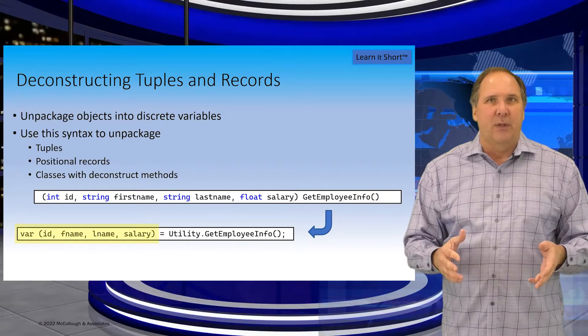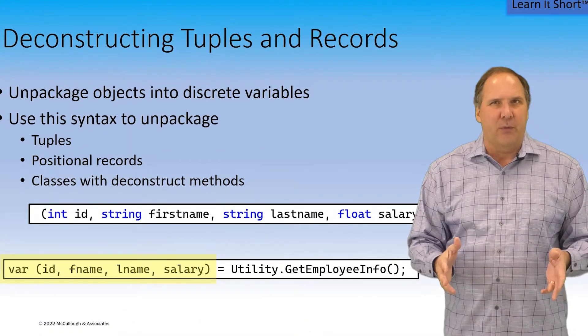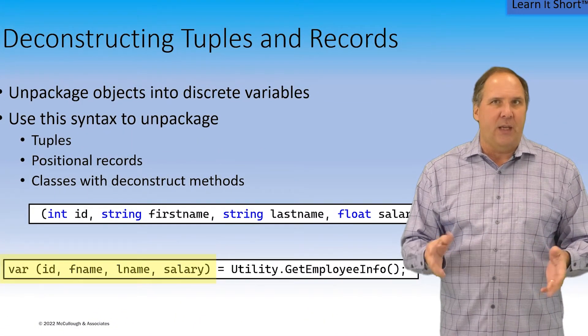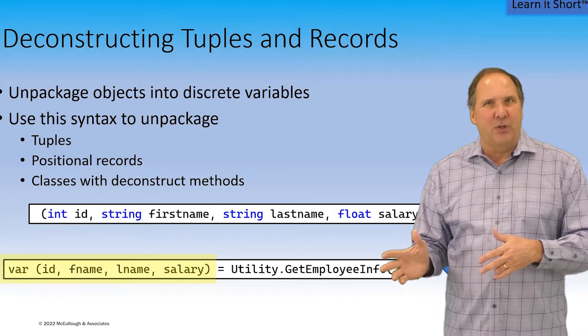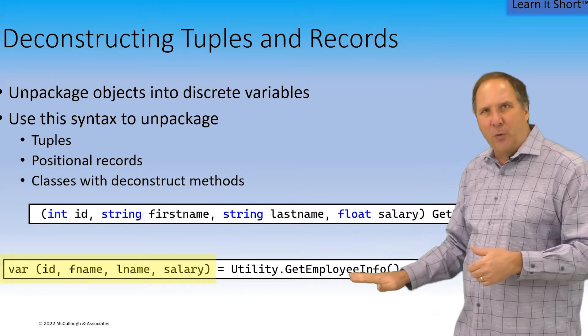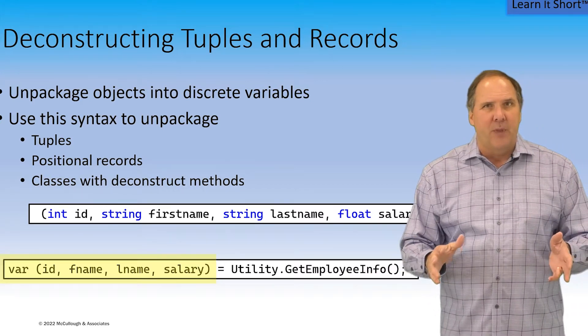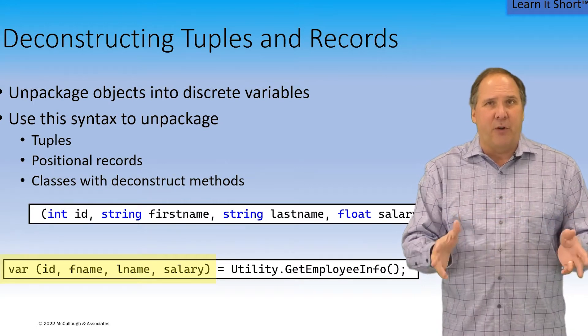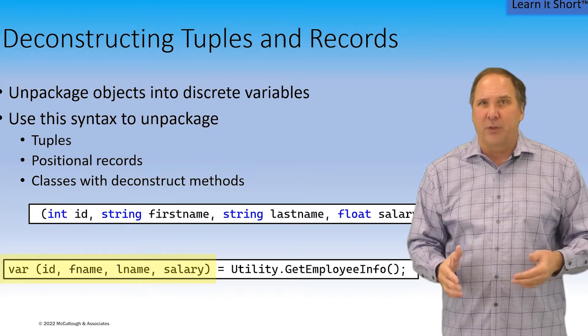In this example, the method getEmployeeInfo returns a tuple containing four properties. The assignment shown here is to four individual variables. They are declared with the var keyword, so the compiler will deduce the types.